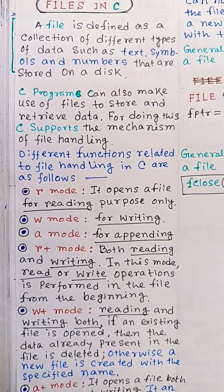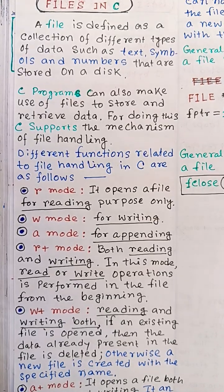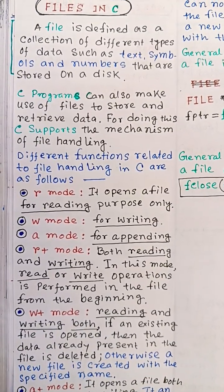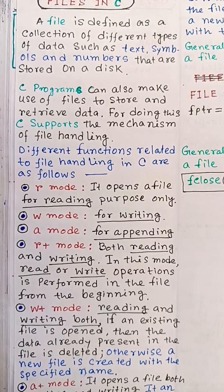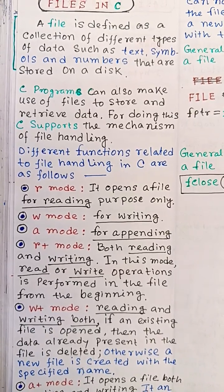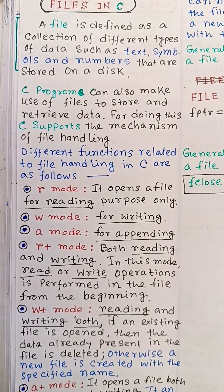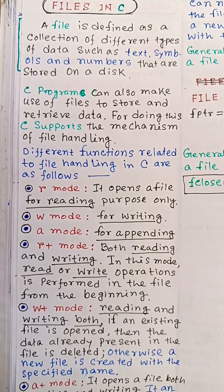W plus mode opens a file for reading and writing both. If the file exists, it is deleted; otherwise, a new file is created with the specified name.